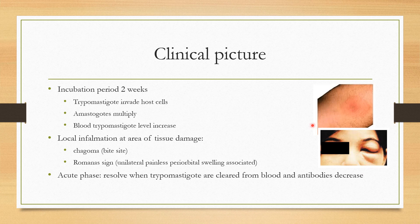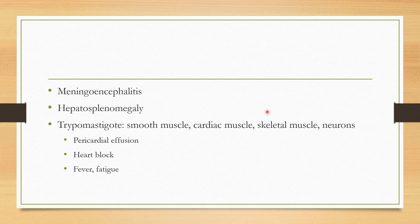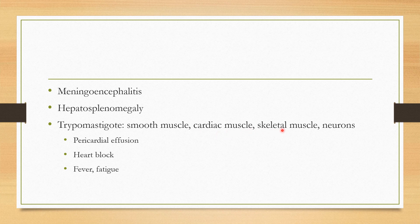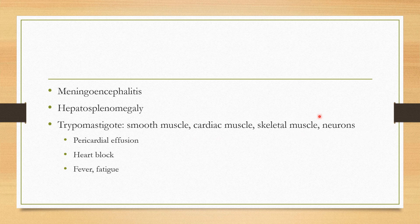The infection can stop at the acute phase with the chagoma or Romaña's sign. In the chronic stage, it leads to inflammation and infection of other organ systems, including meningoencephalitis, liver and spleen enlargement, and involvement of cardiac muscle, skeletal muscle, and neurons, potentially causing pericardial effusion and heart block.